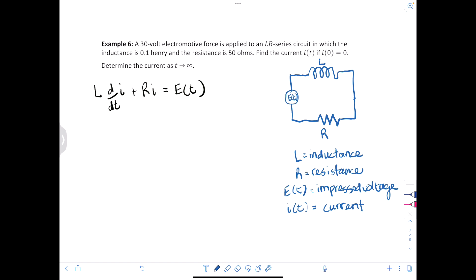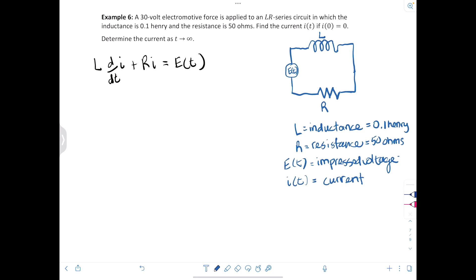And so in this case, we've been given that the inductance is one tenth of a Henry. The resistance is 50 ohms. And our E(t) in this case is going to be 30. And so let's check it out. Plugging in, we will have 0.1 dI/dt plus 50I equals 30.